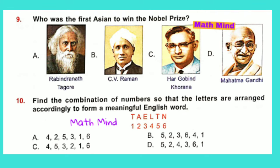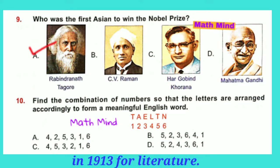Question No. 9: Who was the first Asian to win the Nobel Prize? Option A is correct: Rabindranath Tagore. He was an Indian poet, writer, composer, philosopher, social reformer, and painter. He won the Nobel Prize in 1913 for Literature.